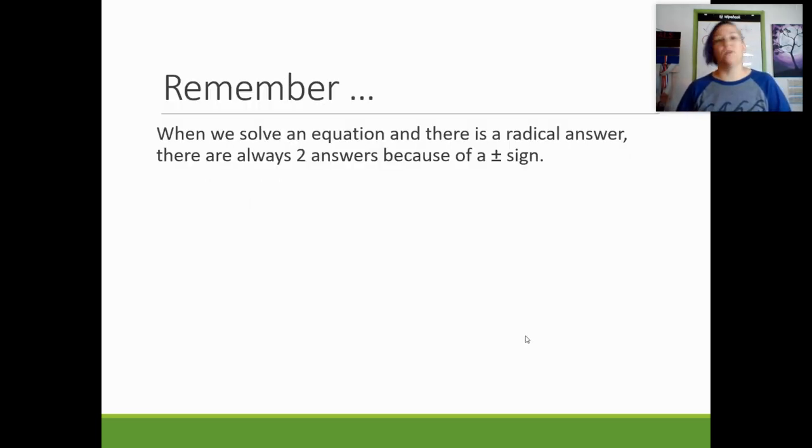Before we do that, I need to point out something that maybe you noticed and maybe you didn't. But any time that we get a square root in our answer, there's always two square roots in the answer, because when we get a square root in the answer, there's always a plus or minus sign in front of it. So square root answers can never come by themselves, they always have a partner.